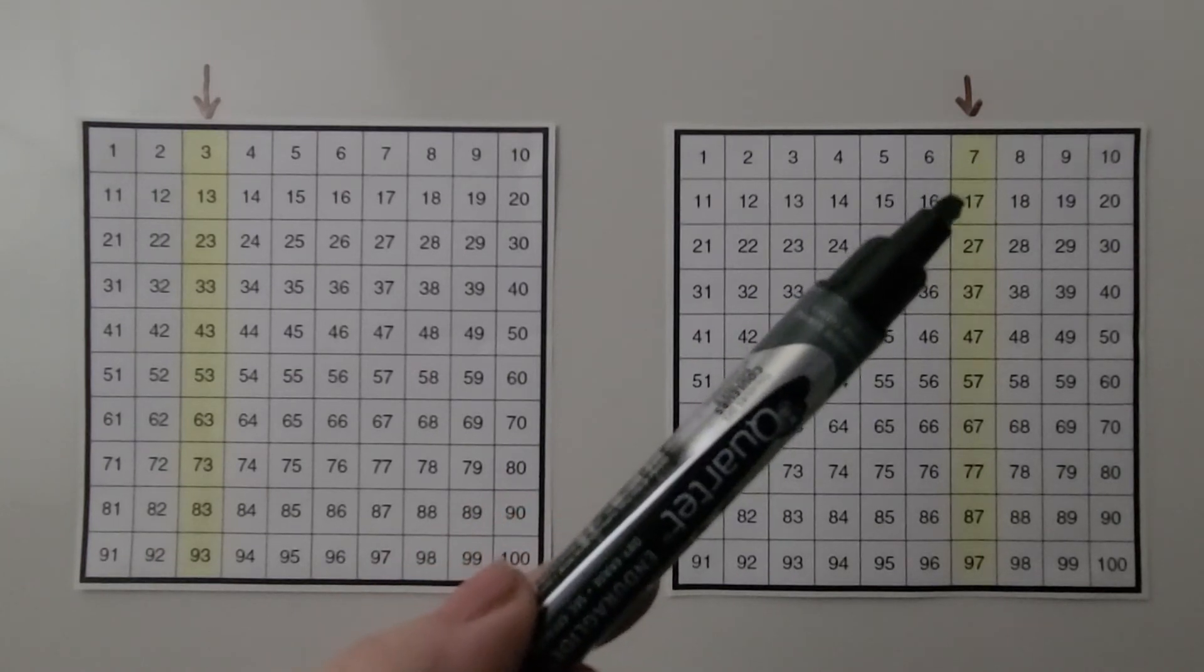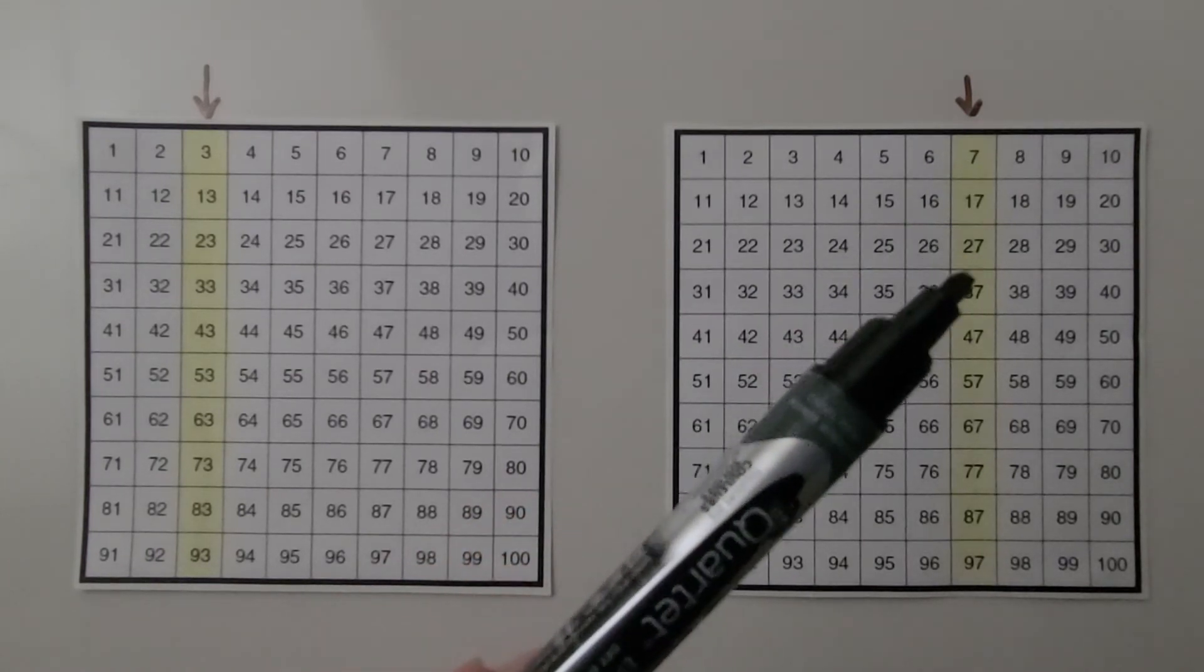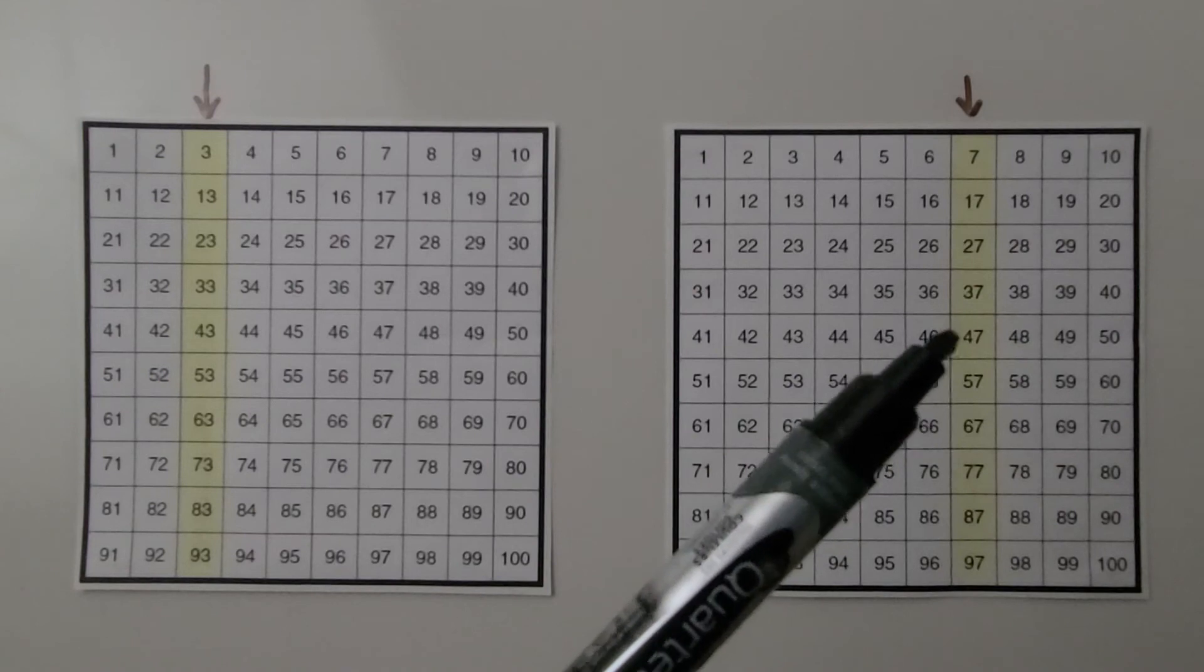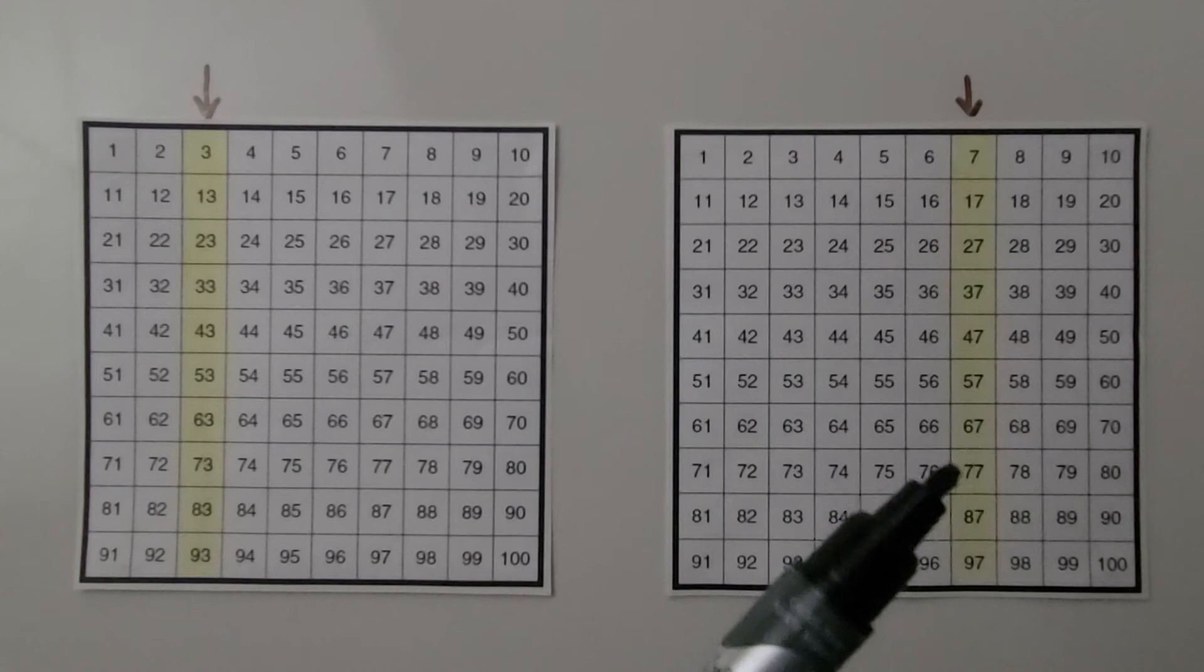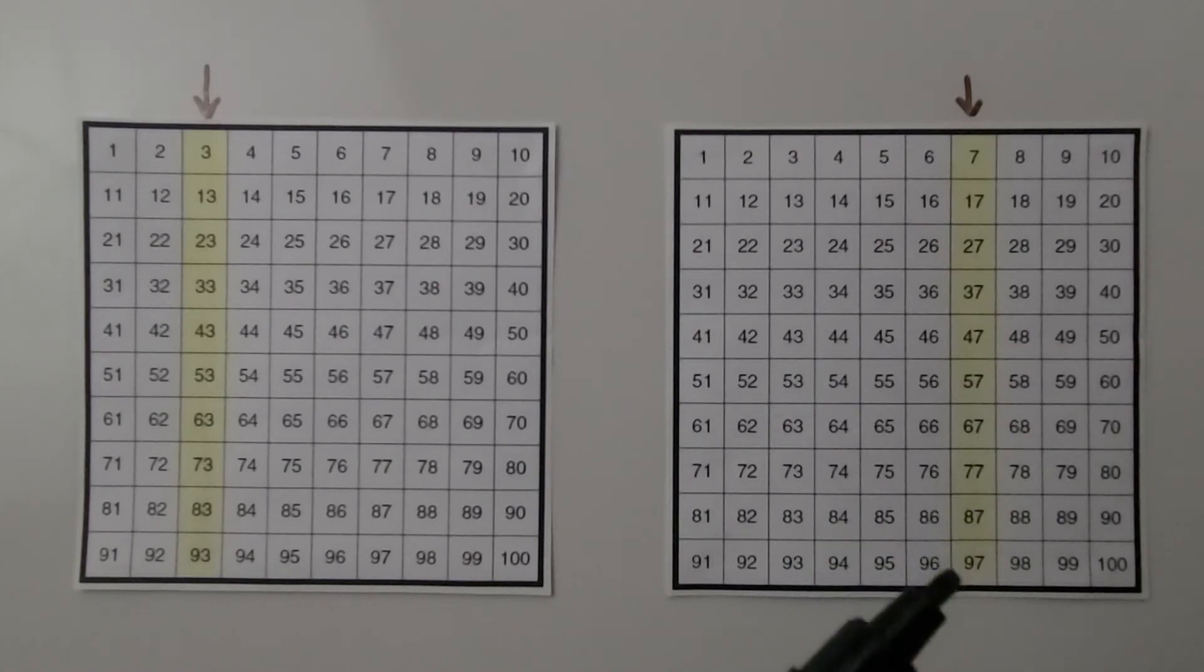We can count by tens starting with 7: 7, 17, 27, 37, 47, 57, 67, 77, 87, 97.